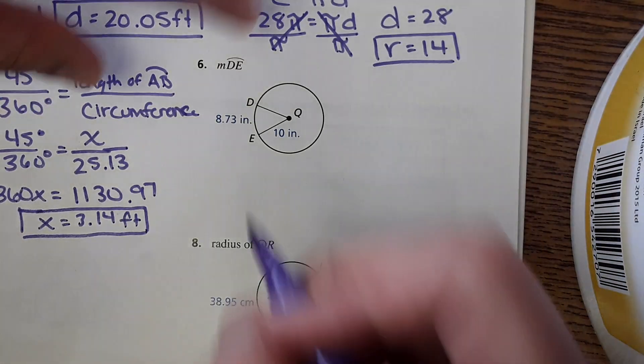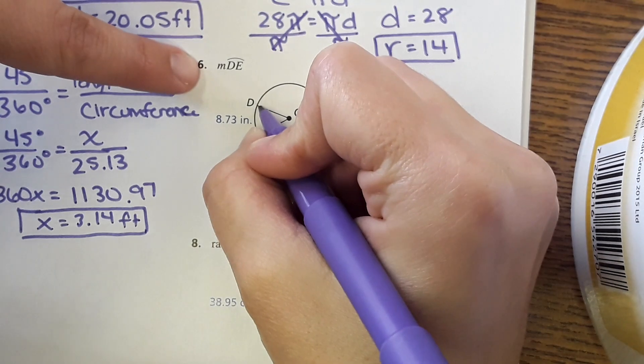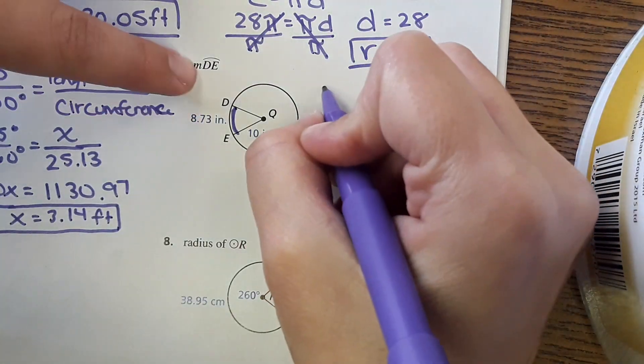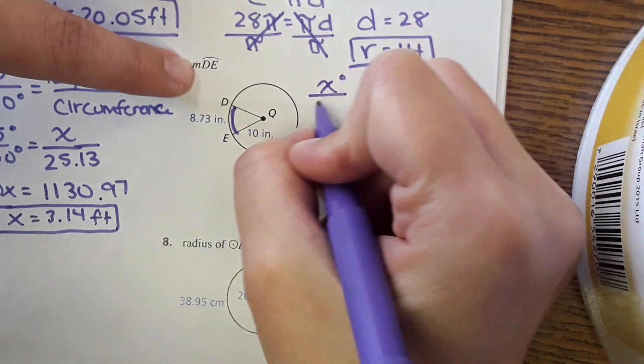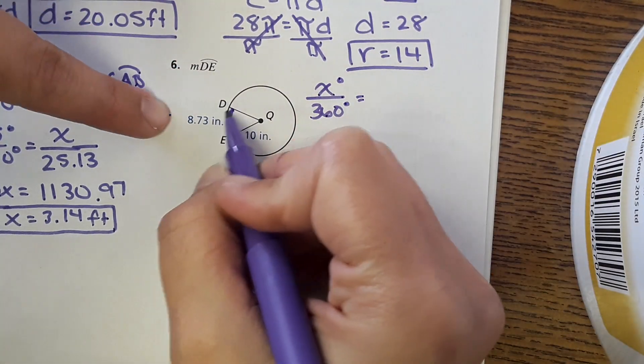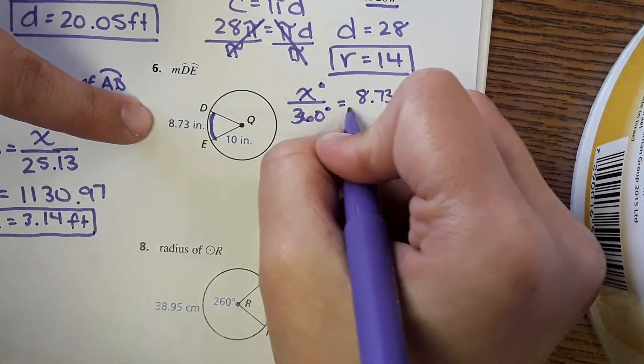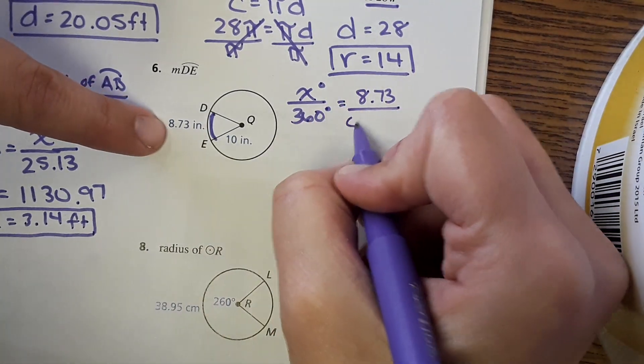So number six, it wants to know the measure of arc DE, so this time they're looking for this degree measure. So we'll have the degrees over three sixty equals it shows that the segment is eight point seven three over circumference of the whole thing.